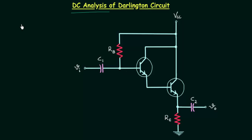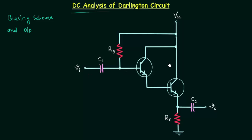Depending on the biasing scheme and the output, we can have different circuits. One such circuit you can see on your screen. This particular circuit is called the Darlington emitter follower circuit.